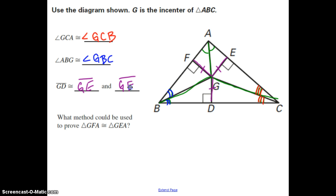Now the last question is asking, what method could be used to prove triangle GFA congruent to triangle GEA? So if we focus on those two triangles, we have triangle GFA and triangle GEA, so we're talking about these two here. We have this angle is congruent to that one, this side is congruent to that side. We know that this side is congruent to itself by the reflexive property.